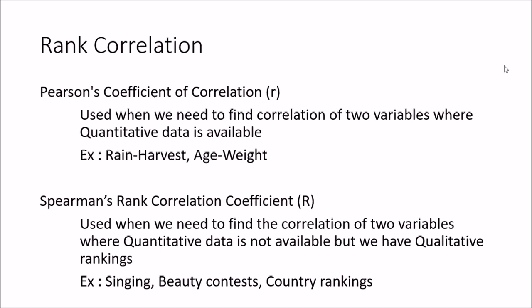But there are some instances where you do not have a numerical value — you have qualitative data instead. For example, in a singing competition you might want to rank contestants, or in a beauty pageant you give ranks to participants, or you might compare country rankings like GDP and GDP per capita. Whenever we have qualitative data like this, we use the Spearman's rank correlation coefficient.